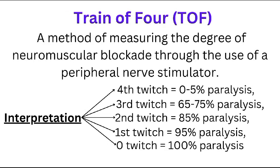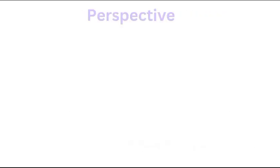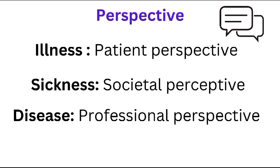Train of Four (TOF) is a testing method for measuring the degree of neuromuscular blockage through the use of a peripheral nerve stimulator. A 4th twitch corresponds to 0–5% paralysis, a 3rd twitch to 65–75% paralysis, a 2nd twitch to 85% paralysis, a 1st twitch to 95% paralysis, and 0 twitches to 100% complete paralysis of the peripheral nerve.